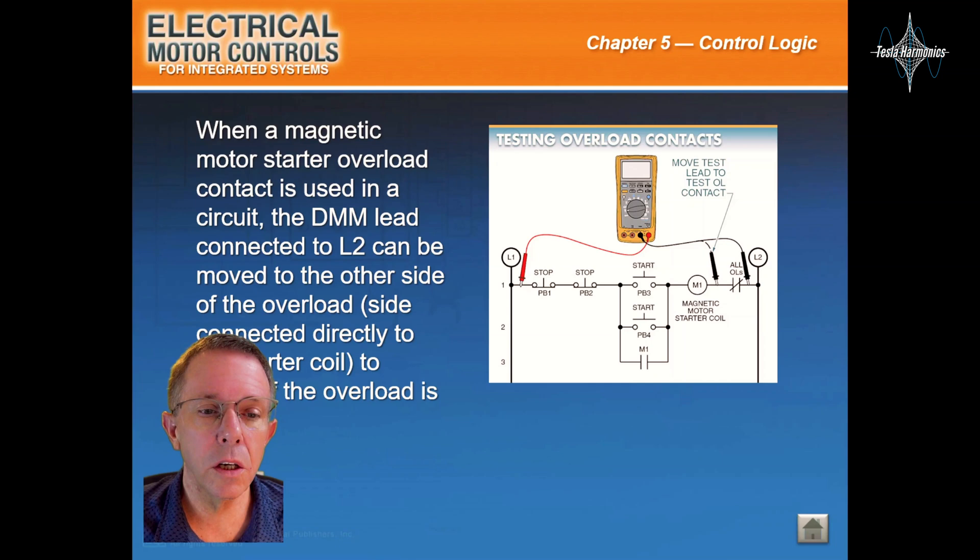When a magnetic motor starter overload contact is used in a circuit, the digital multimeter lead connected to line 2 can be moved to the other side of the load or the side connected directly to the starter coil to check if the overload is open.